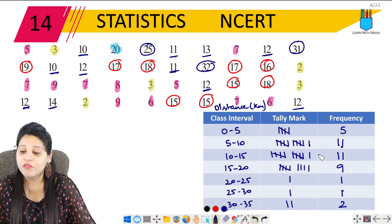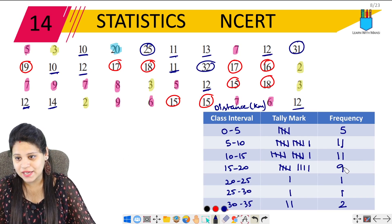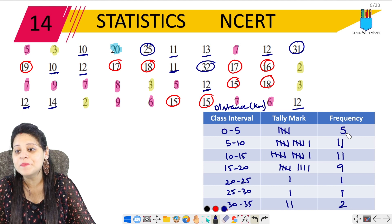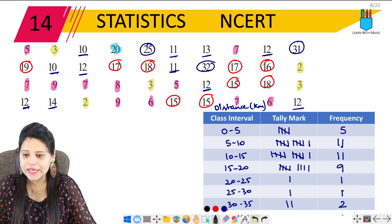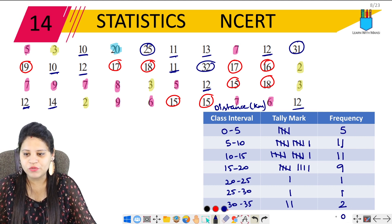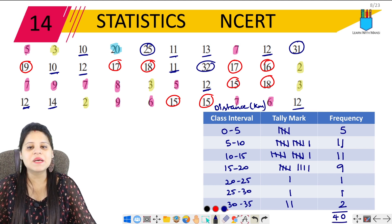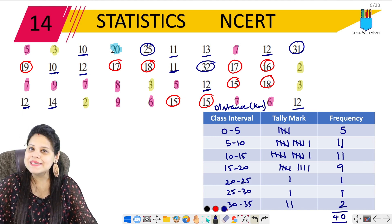The total is 40. Adding up: 5 + 11 + 11 + 9 + 1 + 1 + 2 = 40. That means we have not missed any data here.